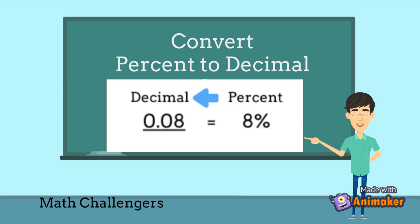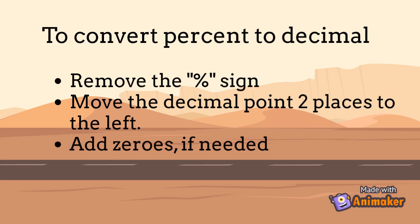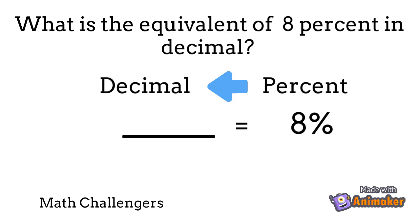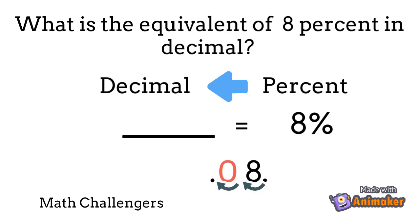Let us now learn how to convert percent to decimal. To convert percent back to decimal, remove the percent sign, move the decimal point 2 places to the left, and add zeros if needed. For example, what is 8% in decimal? First remove the percent sign, then move the decimal point 2 places to the left, and add zeros if needed.